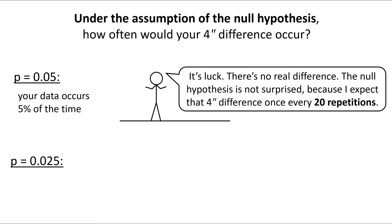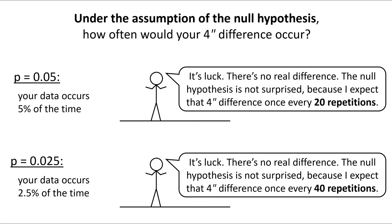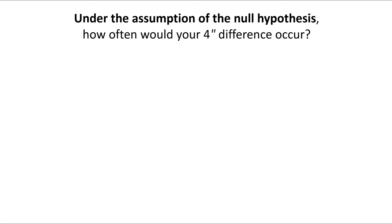What if the p-value is 0.025? That means your 4 inch height difference would only occur 2.5% of the time, if the null hypothesis is true. So the null hypothesis is saying, you're really, really lucky, there's no real difference. I'm not surprised because I expect you'll see 4 inch differences once every 40 repetitions. And you can see where this is going.